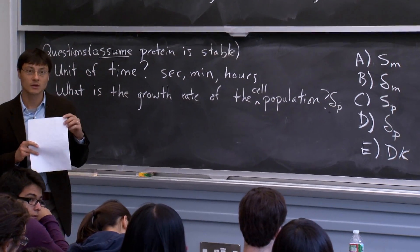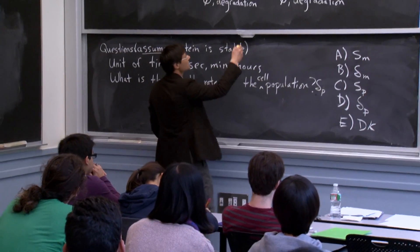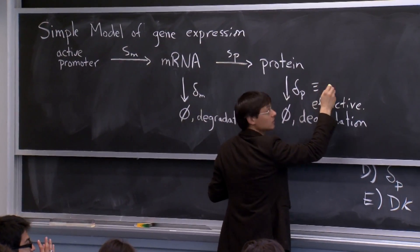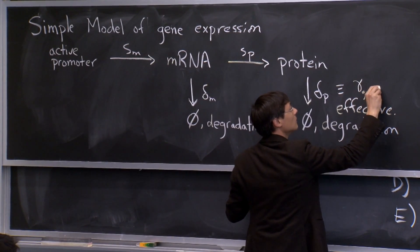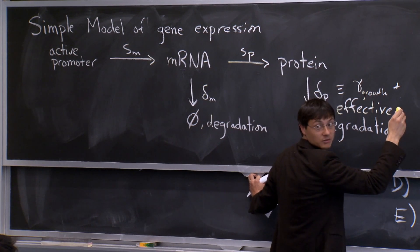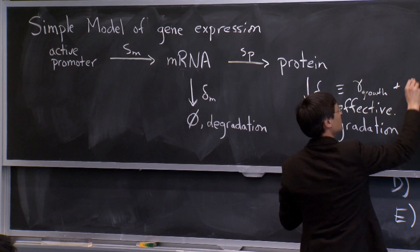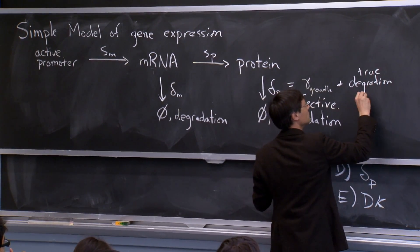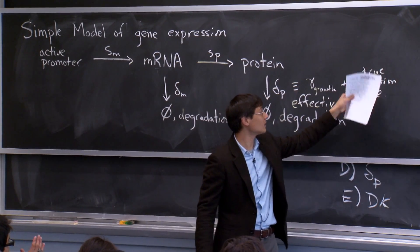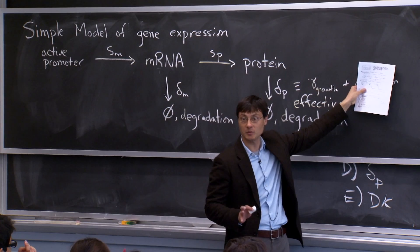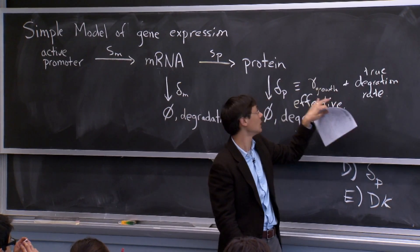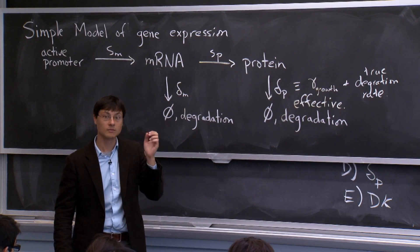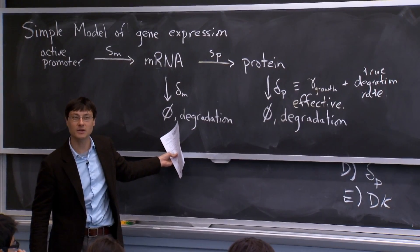So the relevance of the protein being stable: in general, the effective degradation rate delta_P is equal to the growth rate of the population — what you might call gamma_growth — plus the actual physical degradation rate of the protein. If it's stable, then the physical degradation rate is 0, and the effective degradation rate of the protein is just equal to the growth rate of the population.